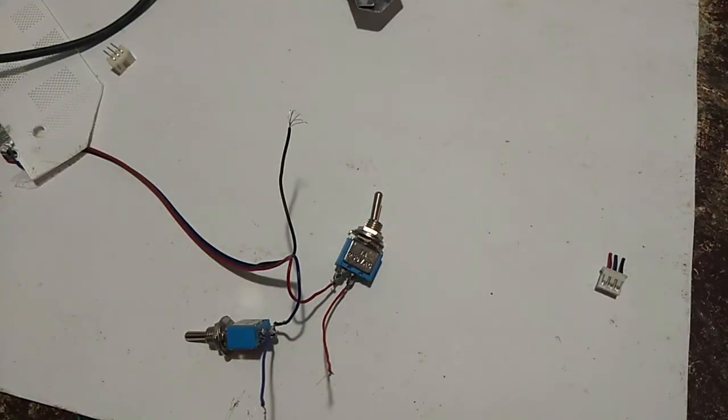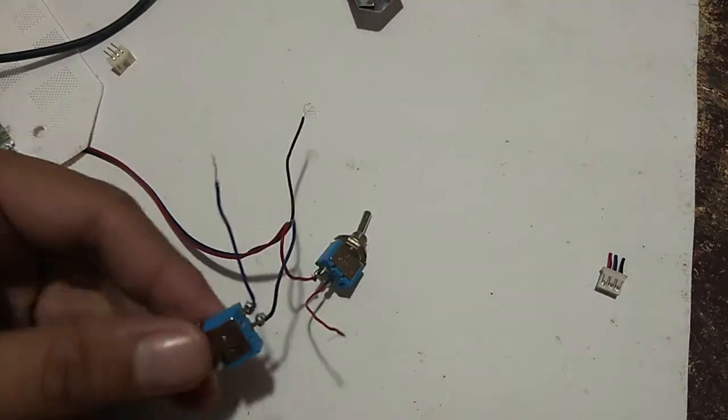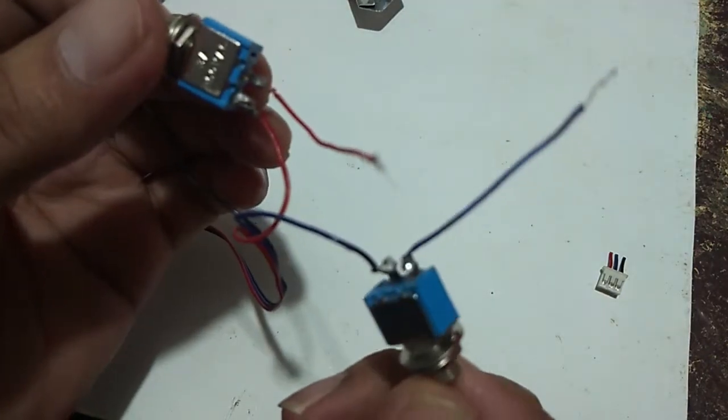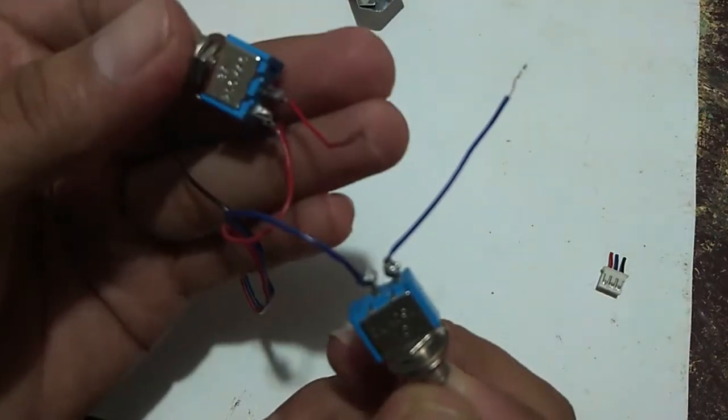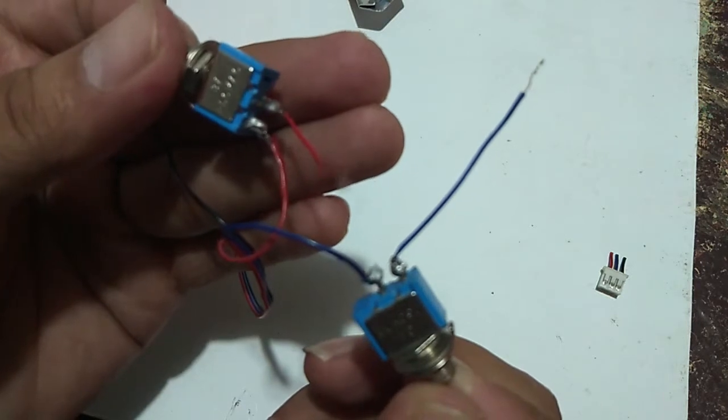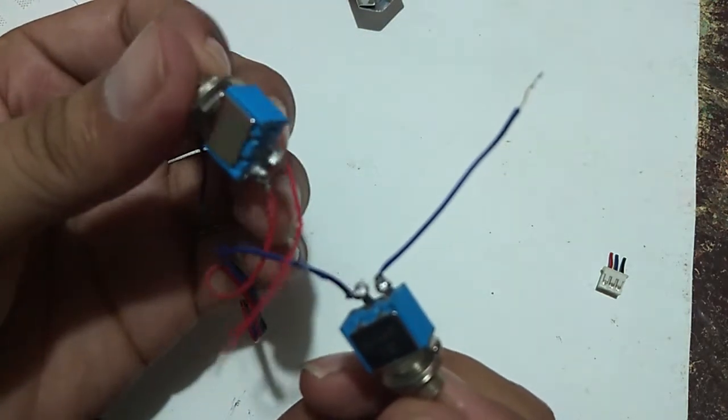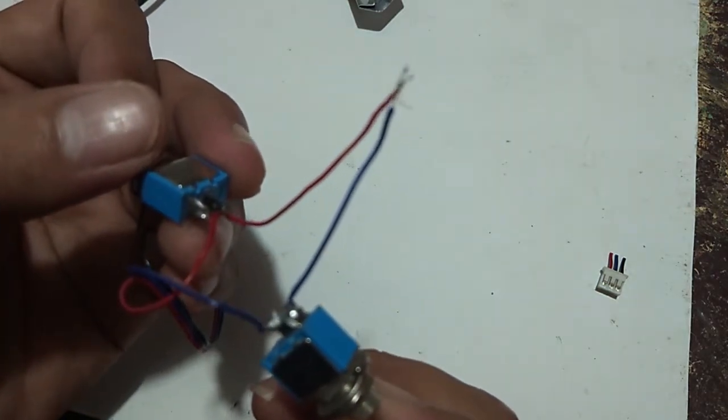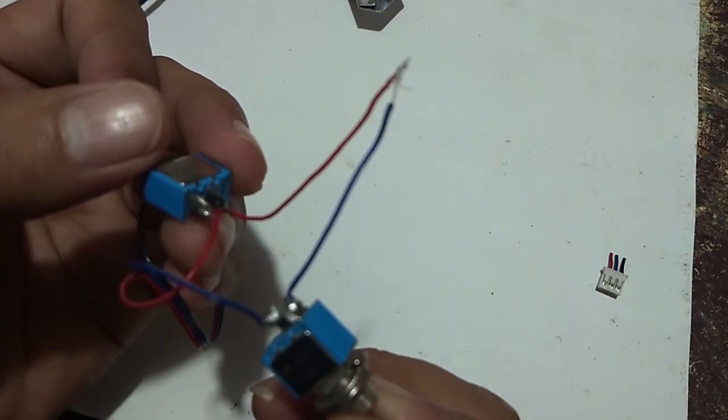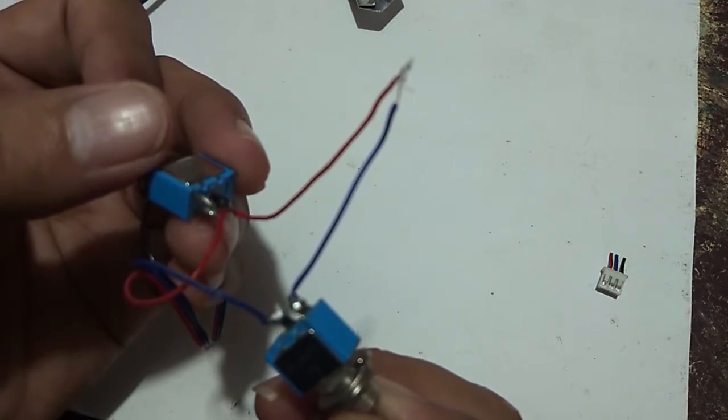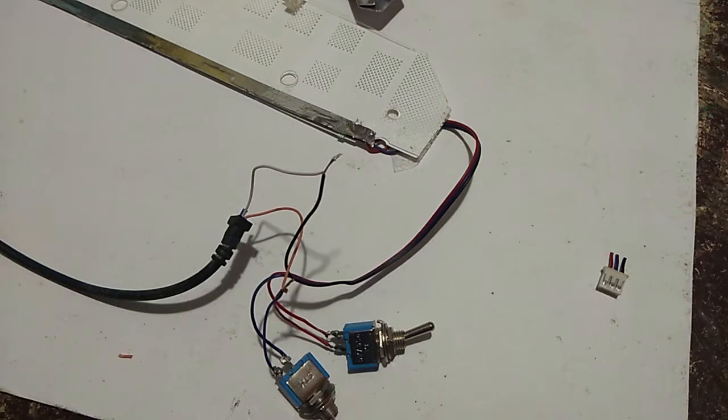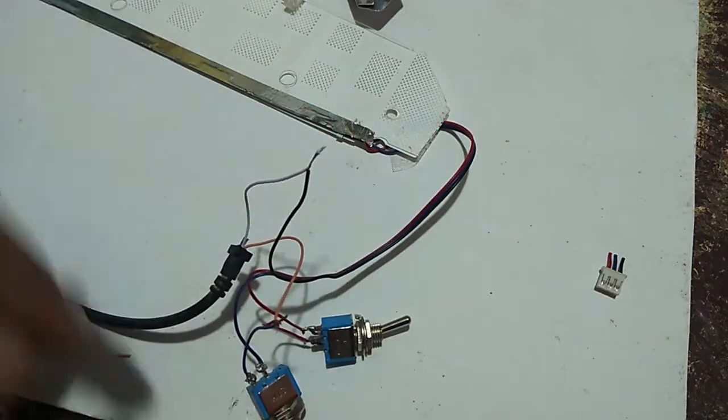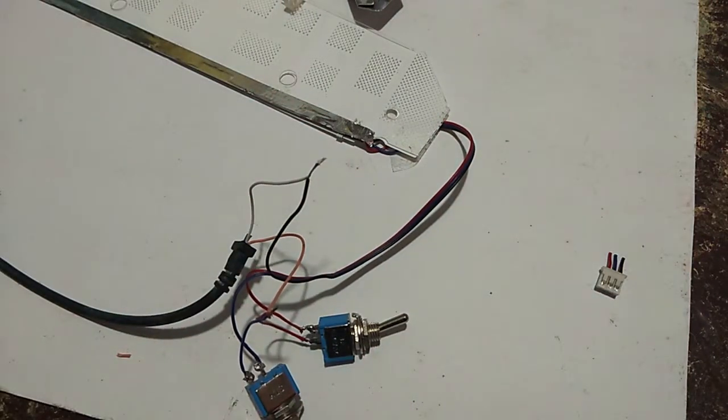Okay, so I already soldered the two switches. You can see. Sorry, it's not a good solder, I know. And now we can solder the two of these wires together. So, before we're gonna solder it together, let's check if the lights are working.